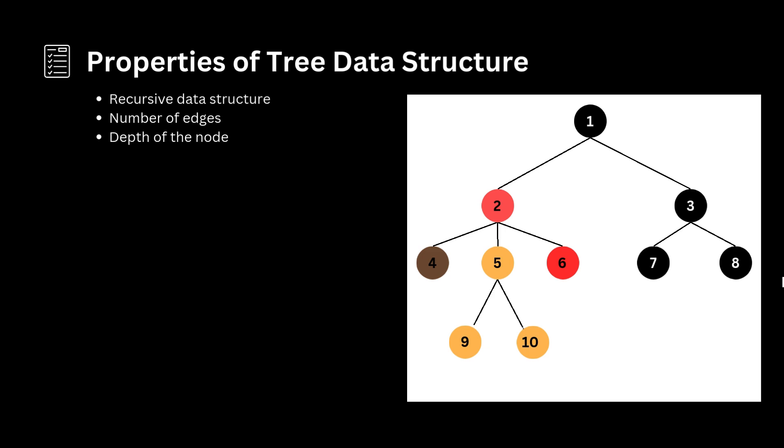Depth of the node: The depth of the node is defined as the length of the path from the root to the node. Each edge in the path contributes one unit to the length. Therefore, the depth of node x can also be described as the number of edges between the root node and node x. The root node has depth of zero.